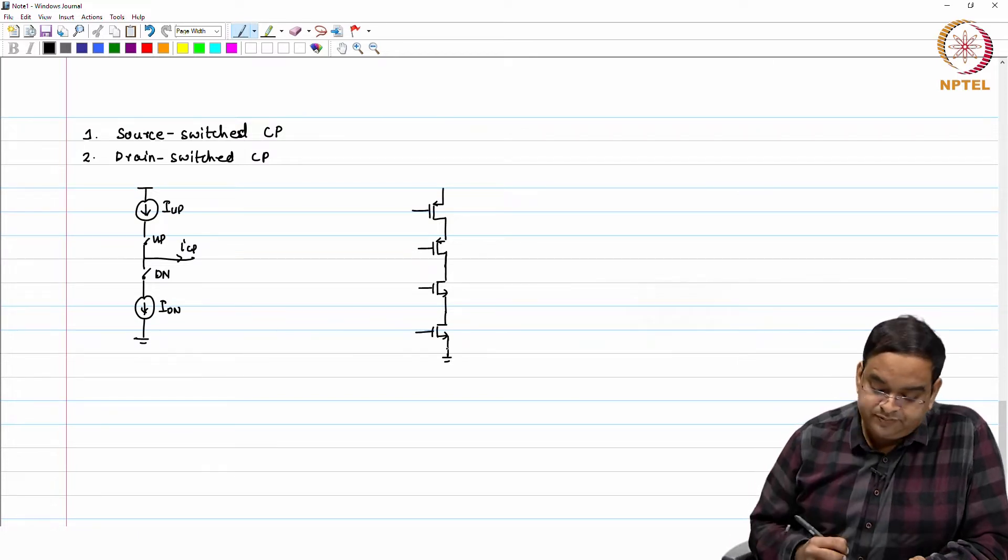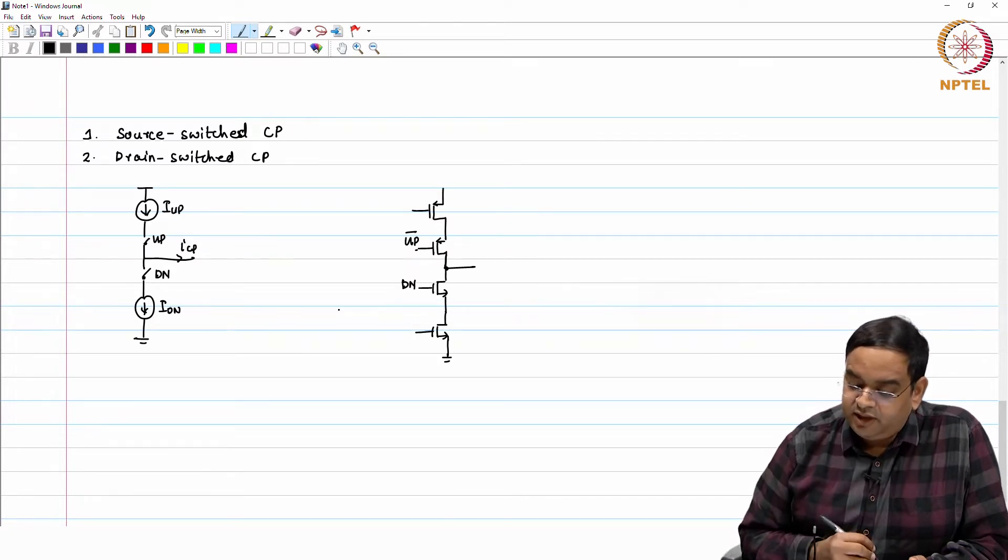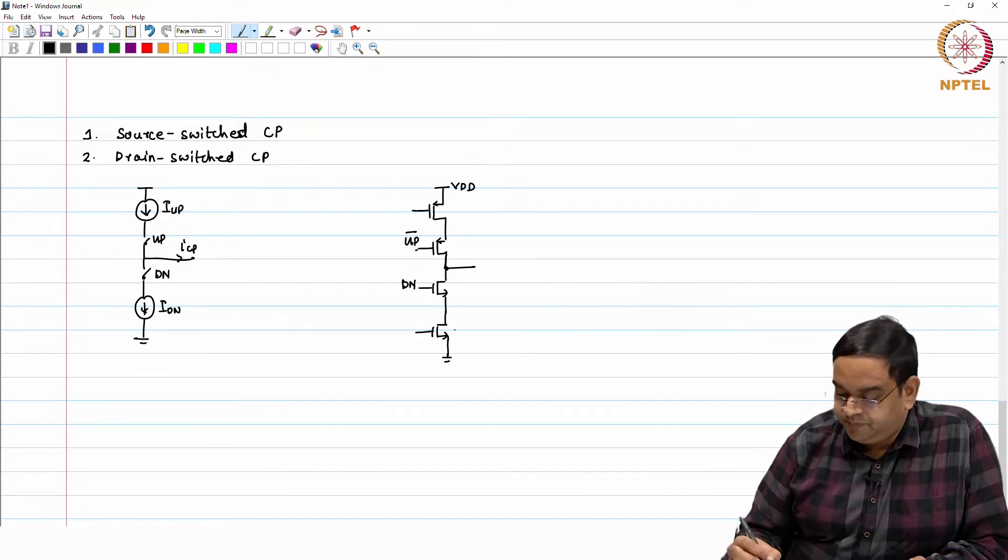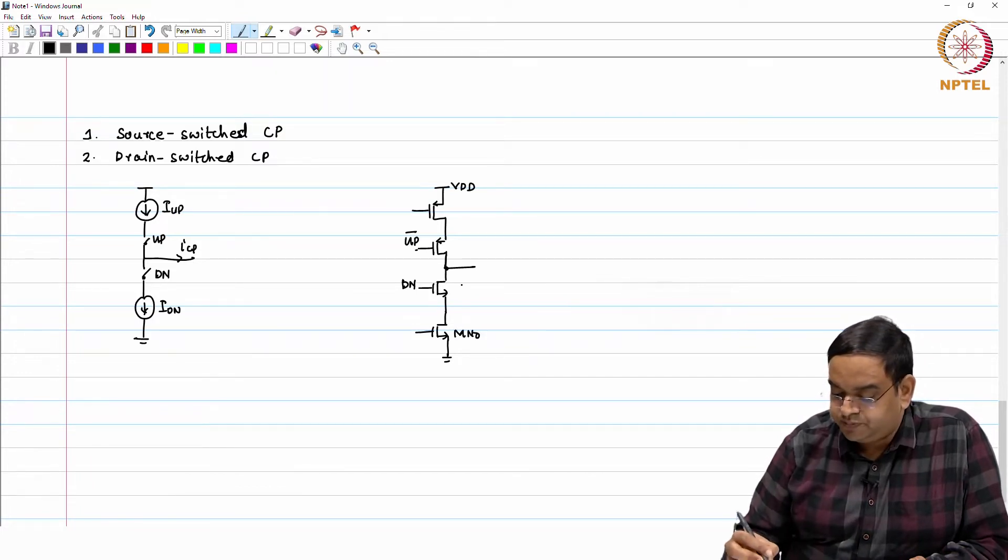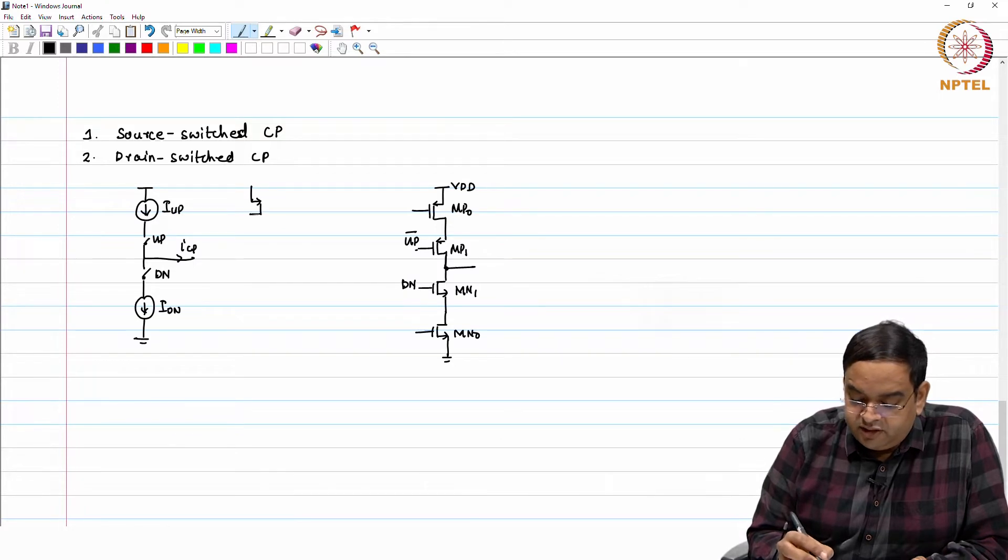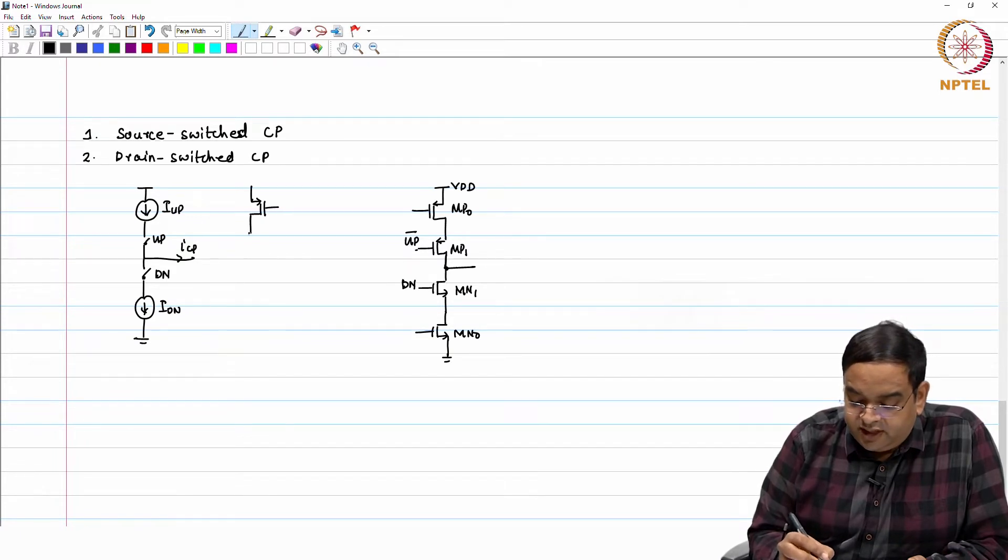If these are current sources, we know that they have to be biased. This switch is a switch, so it was triggered at up bar, this is with down and here this is Vdd, this is Mn0, Mn1, Mp0 and Mp1. For the current source, I will again use the replica based method to decide my current source bias voltage. I can try this, if this works then fine.